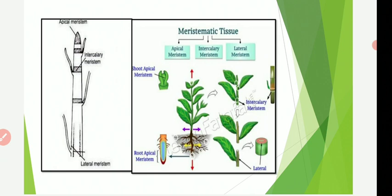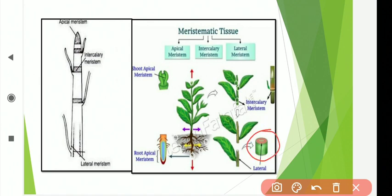The third type based on position is lateral meristem. Lateral meristems are present parallel to the side of the organ in which they are present. Their cells are rectangular with small vacuoles and ergastic substances, and they divide only in the tangential plane or periclinally. They are responsible for increasing the thickness or girth of organs in which they are present. In the diagram, lateral meristem is represented and is present in the form of cambium in vascular bundles, responsible for addition of secondary xylem and phloem.